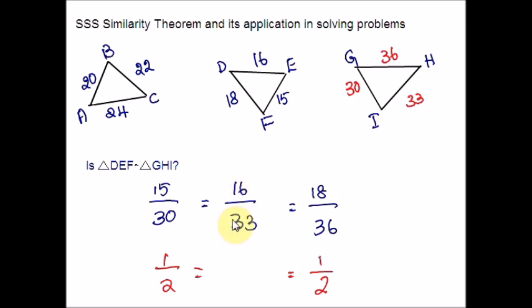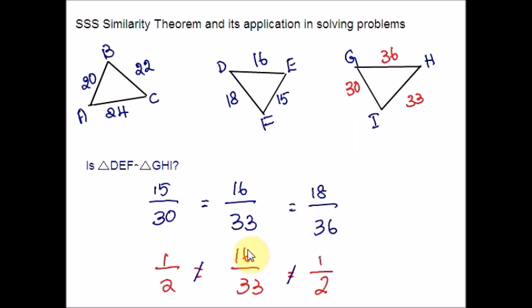Now let us look at the middle one: 16 over 33. 16 times 2 is 32, not 33, so this cannot be reduced to 1 over 2. So this cannot be equal. Therefore, triangle DEF is not similar to triangle GHI, since the proportions do not all satisfy. All three fractions have to reduce to the same value; only then can we say that the two triangles are similar.